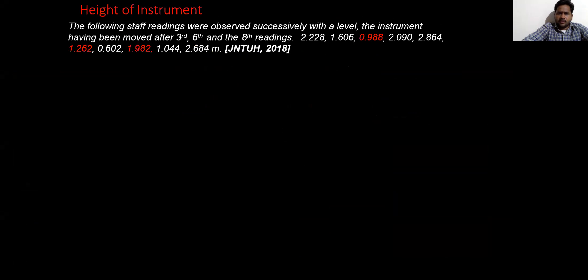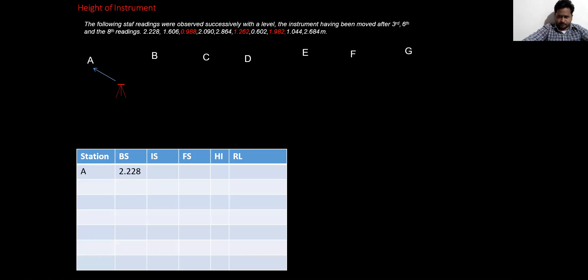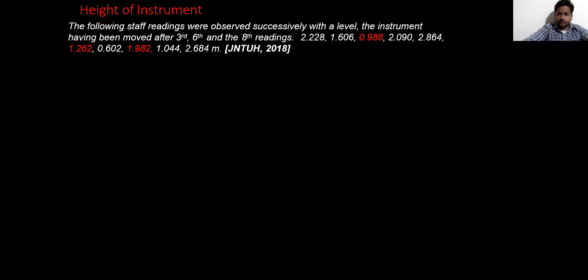The following staff readings were observed successively with the level, the instrument having been removed after the 3rd, 6th, and 8th readings. The readings are: 2.228, 1.606, 0.988, 1.262, 0.602, 1.982, and so on. This is a previously asked JNTU 2018 problem.